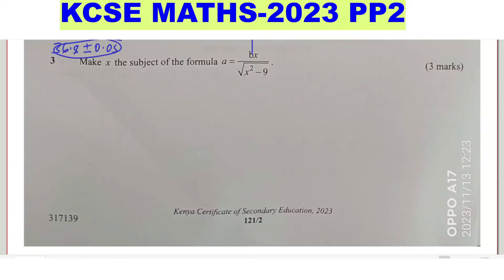Question 3: make x the subject of the formula. a is equals to bx divided by the square root of x squared minus 9.